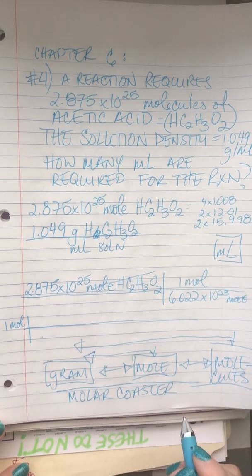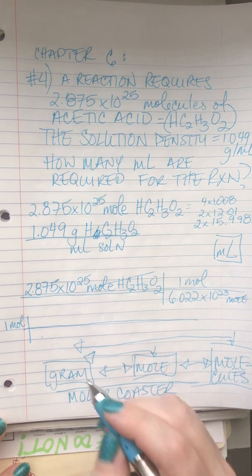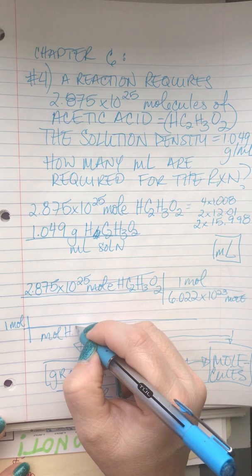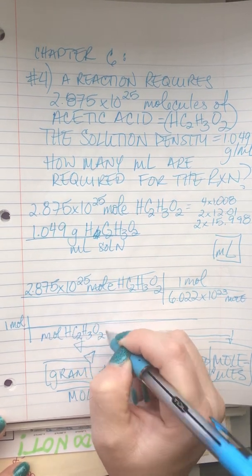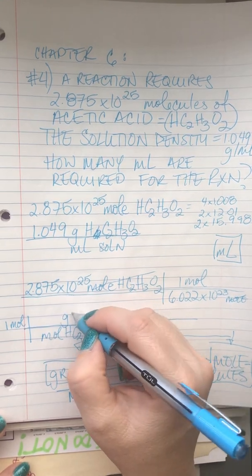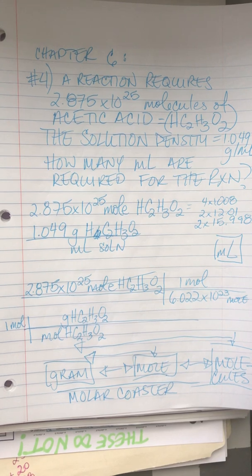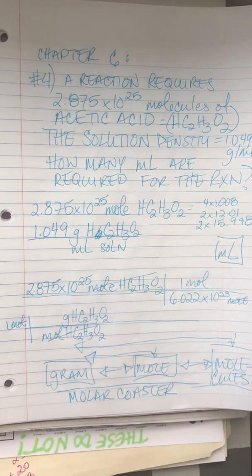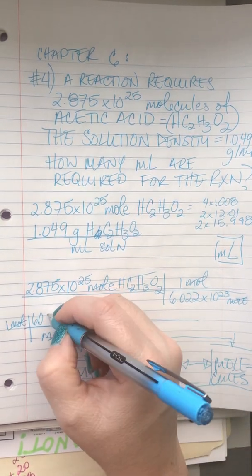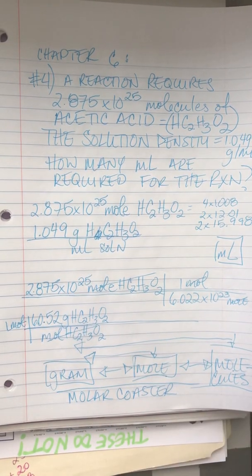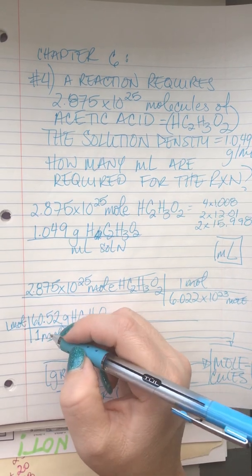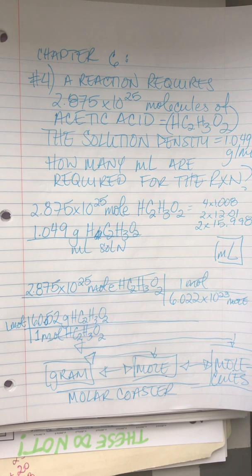What unit needs to go on the bottom of this conversion? Moles on the bottom, and grams will go on top. I got 60.052 grams per mole for the molar mass of acetic acid — close enough to 60.048. So that value goes on the bottom, with grams up top.